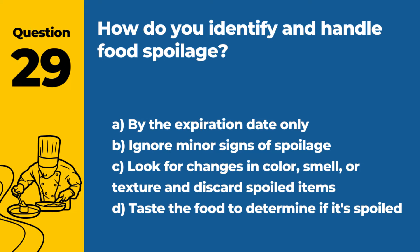Question 29. How do you identify and handle food spoilage? a. By the expiration date only. b. Ignore minor signs of spoilage. c. Look for changes in color, smell, or texture, and discard spoiled items. d. Taste the food to determine if it's spoiled. Answer c. Look for changes in color, smell, or texture, and discard spoiled items. To identify food spoilage, look for changes in color, smell, or texture, and discard any items that show signs of spoilage.